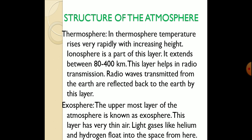In the thermosphere, temperature rises very rapidly with increasing height. The ionosphere is a part of this layer, extending between 80 to 400 kilometers. This layer helps in radio transmission — radio waves transmitted from the Earth are reflected back by this layer. The exosphere is the uppermost layer of the atmosphere, where the air is very thin and light gases like helium and hydrogen float out into space.